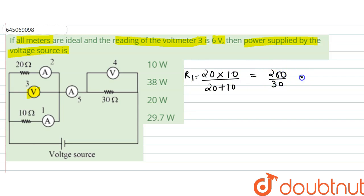R2 is given to us as 30 ohms, so our equivalent can be written as R1 plus R2, which is equal to 20 by 3 plus 30, which is equal to 90 plus 20.